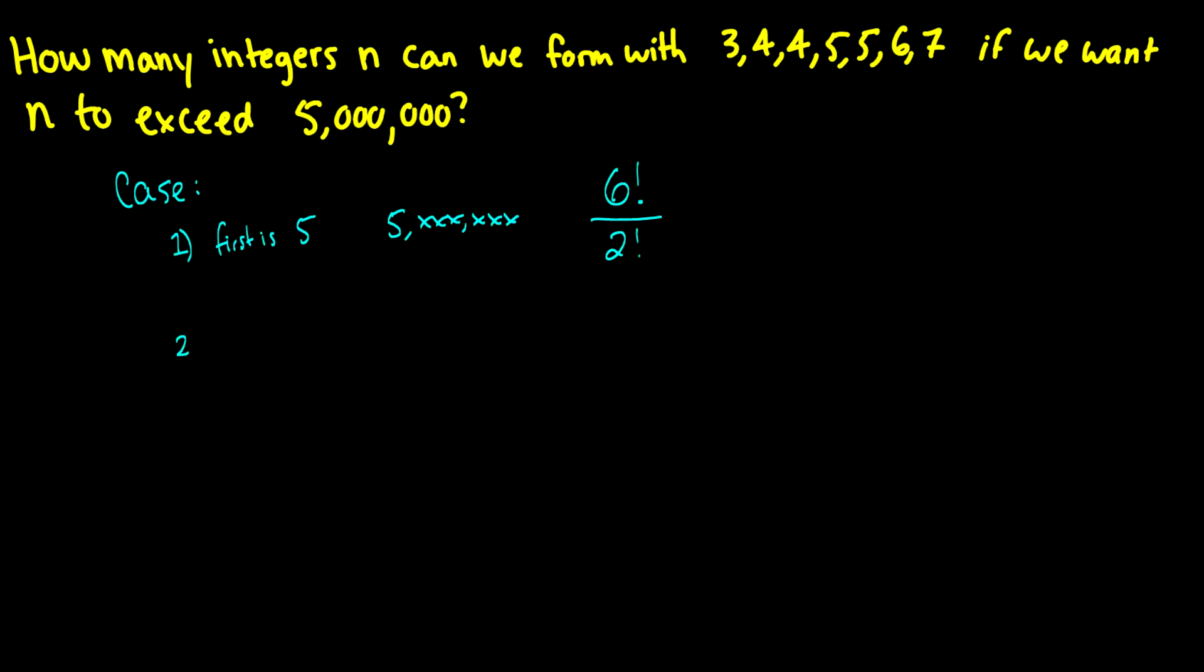Okay, so case 2, what if we start with a 6? Well, this is about the same thing, so we have 6 factorial total ways to arrange the remaining 6 numbers, except this time we have double 4s and double 5s, so we have to divide by 2 factorial twice, and that will cover all of the cases that this number starts with a 6, and then the last one is the case where the first number is a 7, which actually has the same result as the 6.